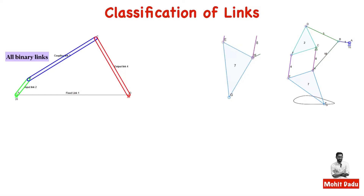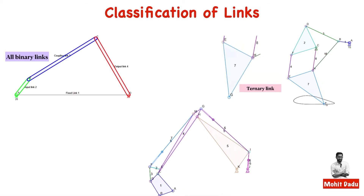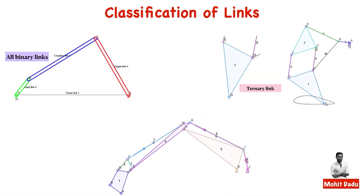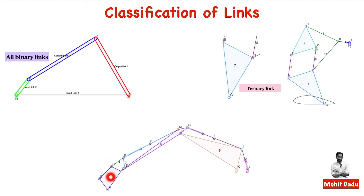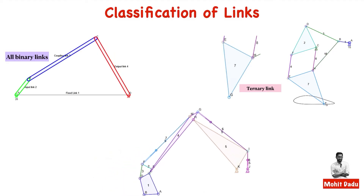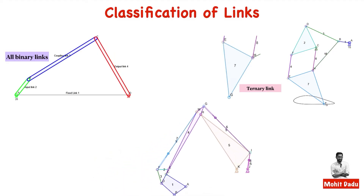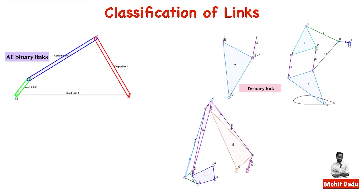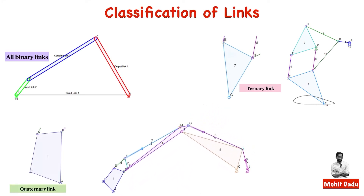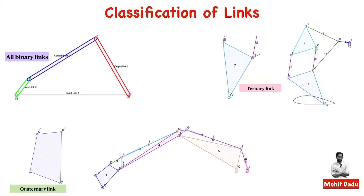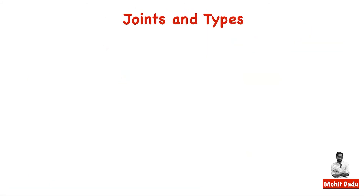Link 7 is a ternary link. In the backhoe digging mechanism used in JCBs, link 1 has four connection points where it can connect to other links, making it a quaternary link. This completes the classification of kinematic links or elements.